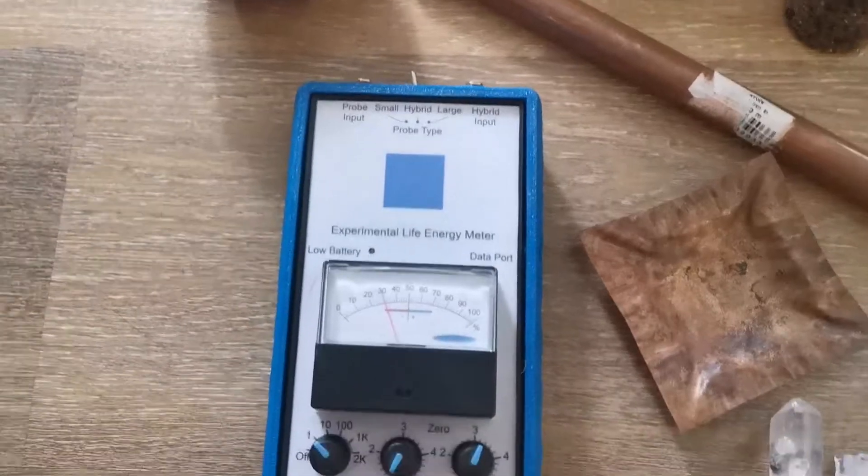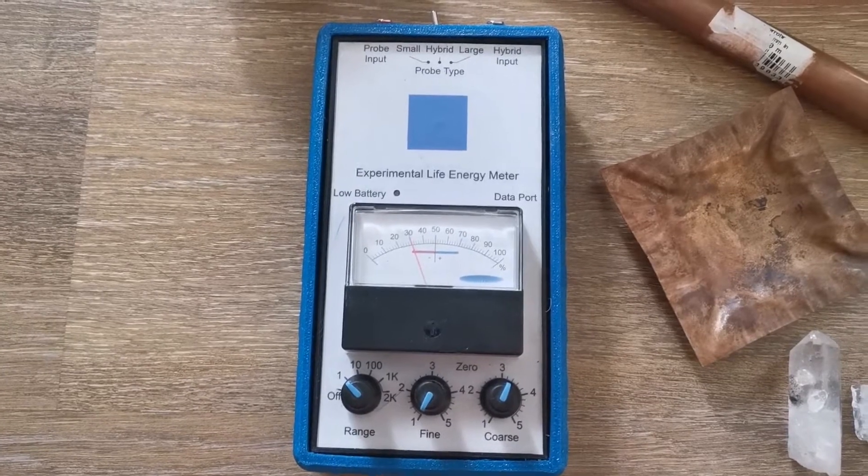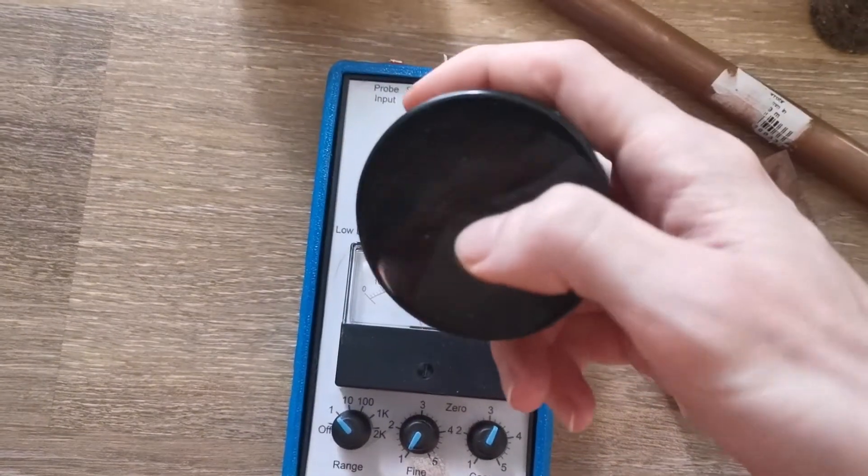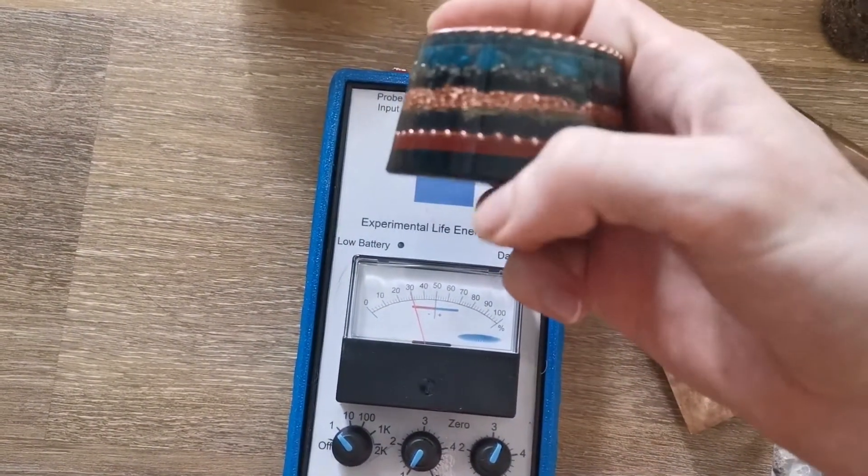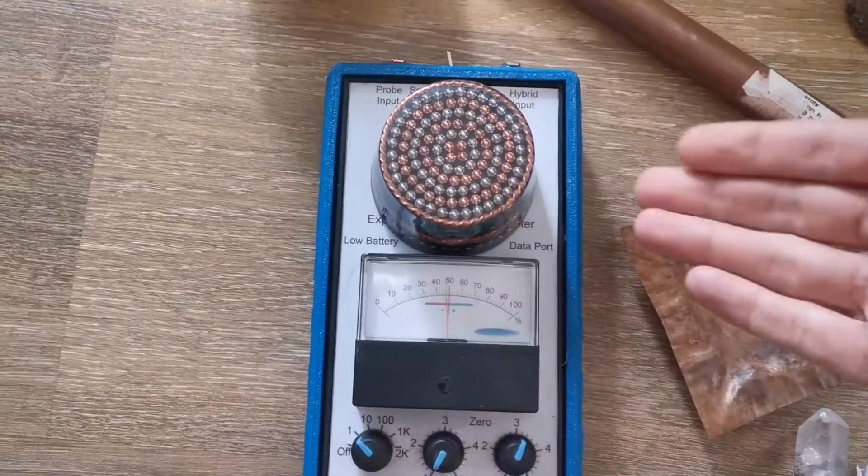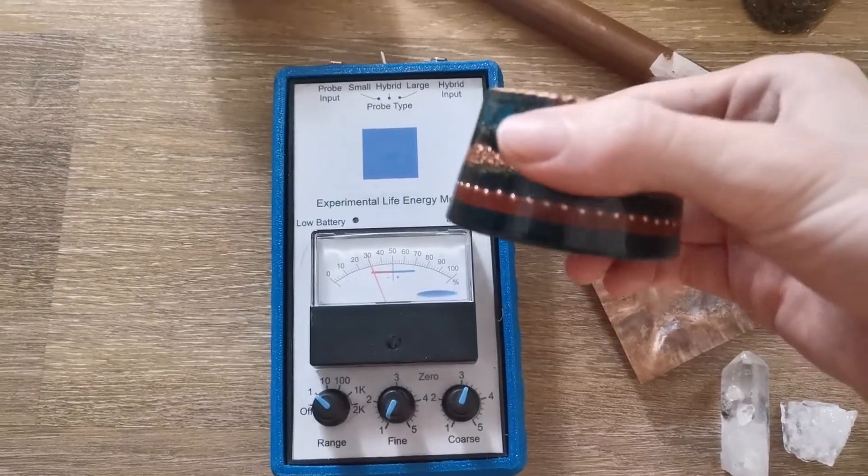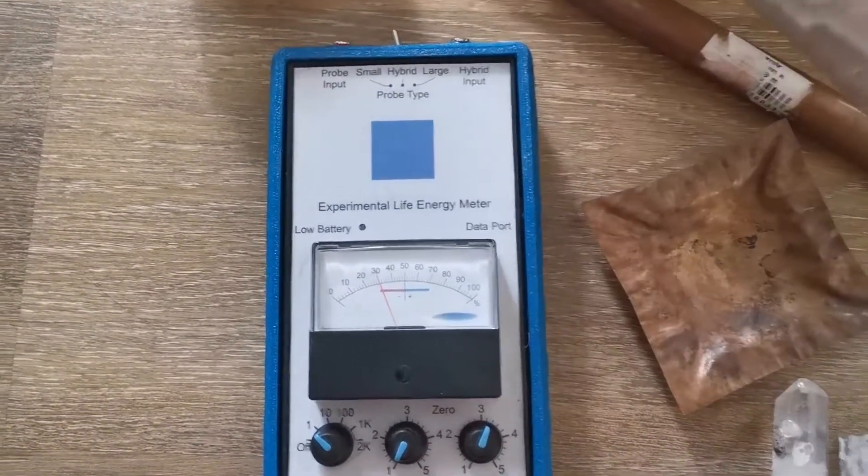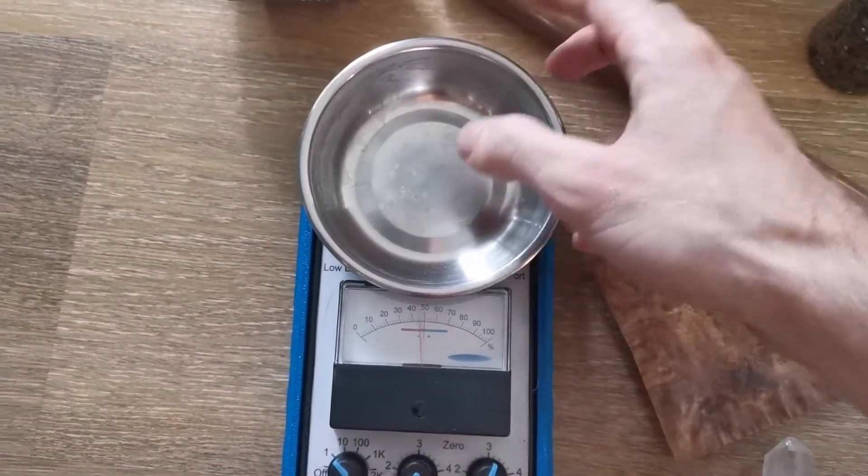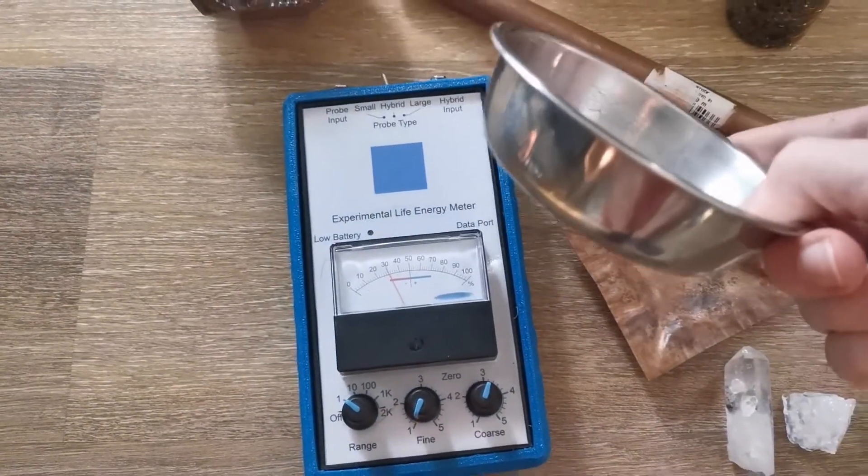So basically, if you compare orgonite with this device, it's just measuring how much metal is there in your orgonite. And especially how much metal is on the bottom surface. If it's farther above, the reading will also be not that strong. It makes no sense to measure orgonite with this device. It's just my opinion. As I've shown, I have another one, the stainless steel bowl. Strong orgonite. But it's just metal.